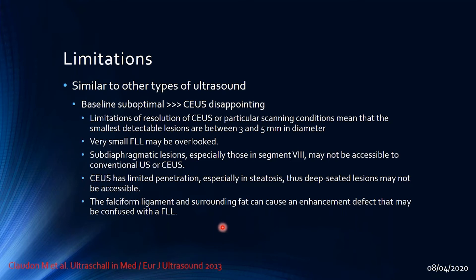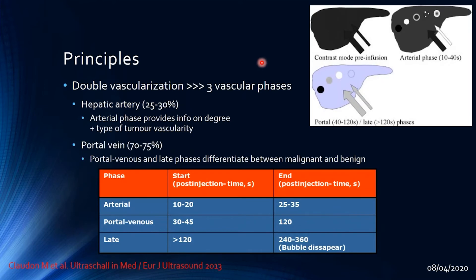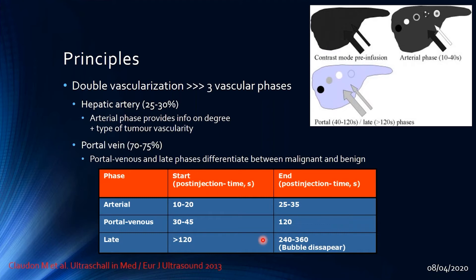The principle of contrast-enhanced ultrasound for the liver relies on the liver's double vascularization through the hepatic artery and portal vein. There is an initial arterial phase starting at 10–20 seconds post-injection and ending at 25–35 seconds, then a portal venous phase from 30–45 seconds up to 120 seconds, and a late phase from 120 seconds up to 240–360 seconds when the microbubbles are destroyed.